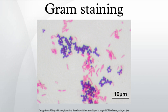He included in his short report the observation that the Typhus bacillus did not retain the stain. Gram staining is a bacteriological laboratory technique used to differentiate bacterial species into two large groups based on the physical properties of their cell walls.